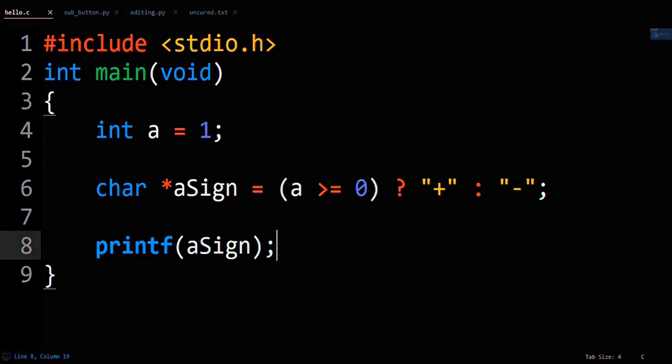Ternary operator in C is a shorthand if-else that evaluates to a value when you're doing an assignment. For instance, here you have the number A that equals positive 1.